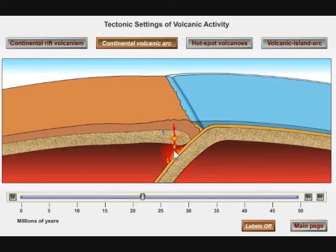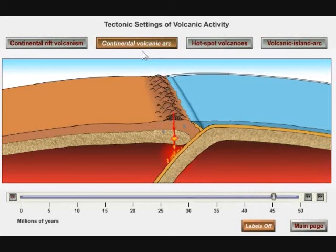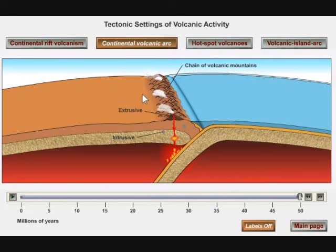A whole series of volcanoes begins to pop up along the edge of the continent, parallel to the trench. We call this a continental volcanic arc. The Andes Mountains are a classic example of such a system.